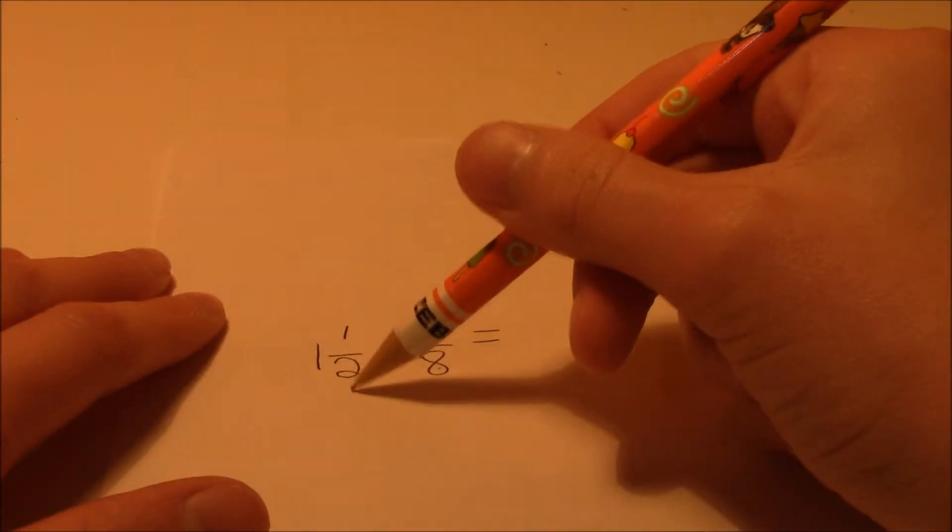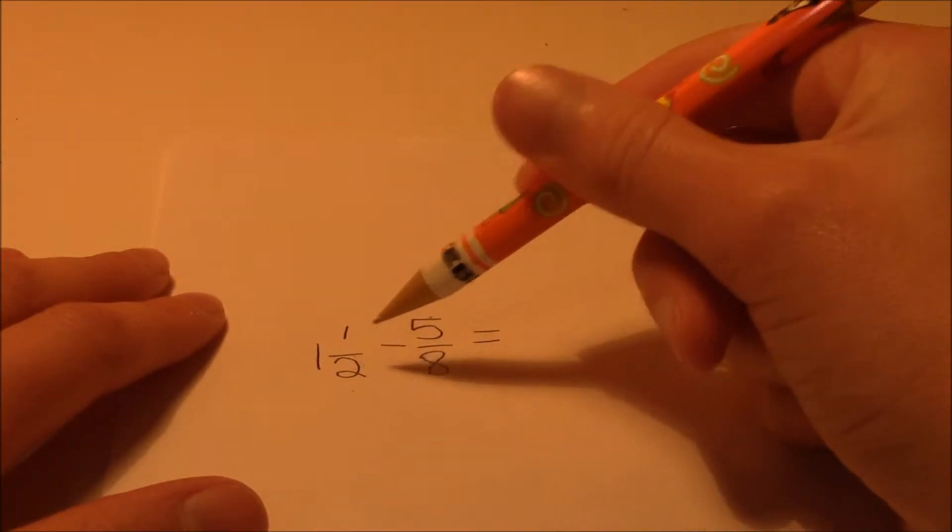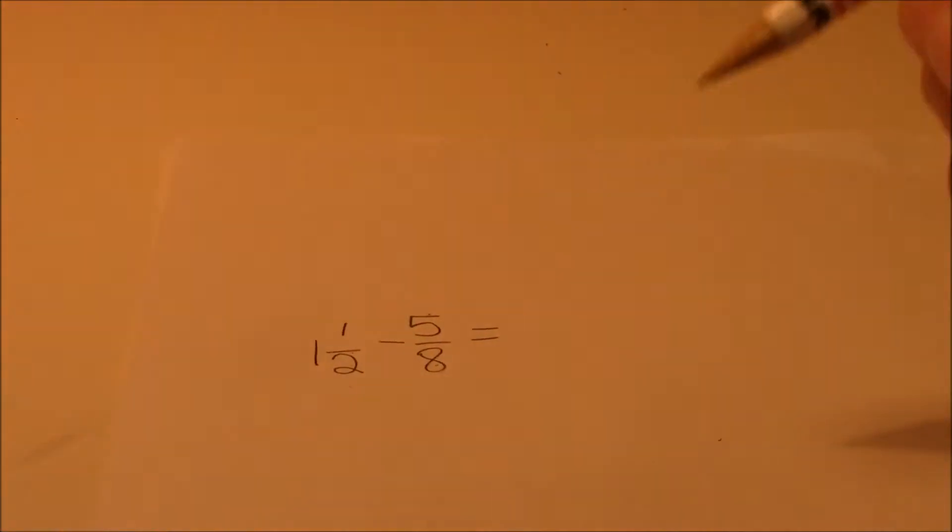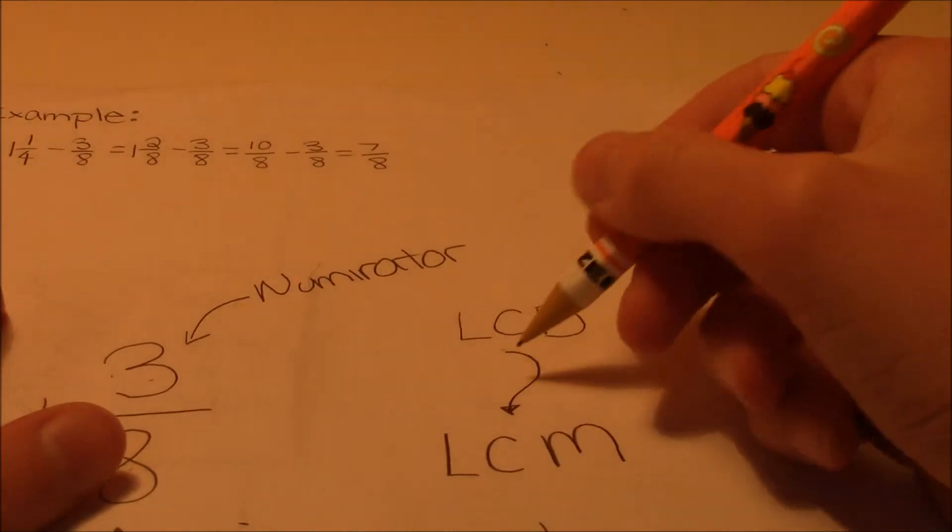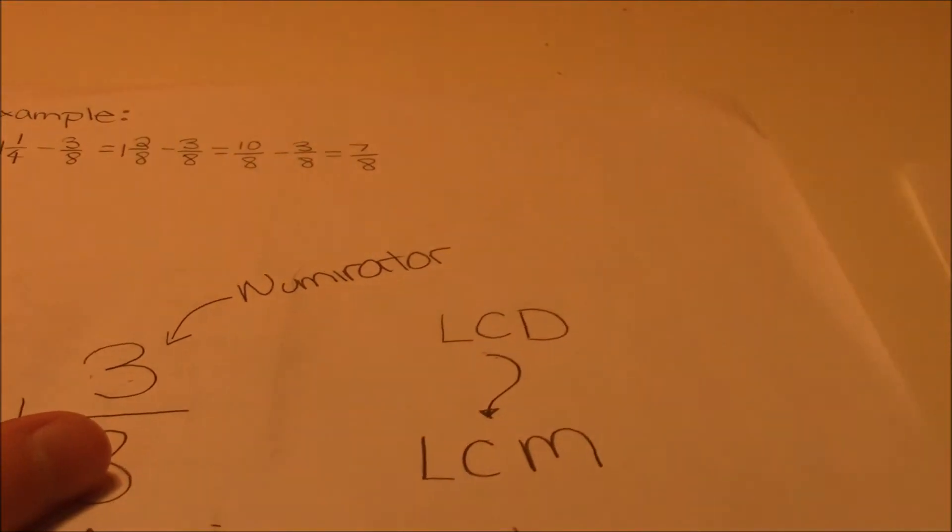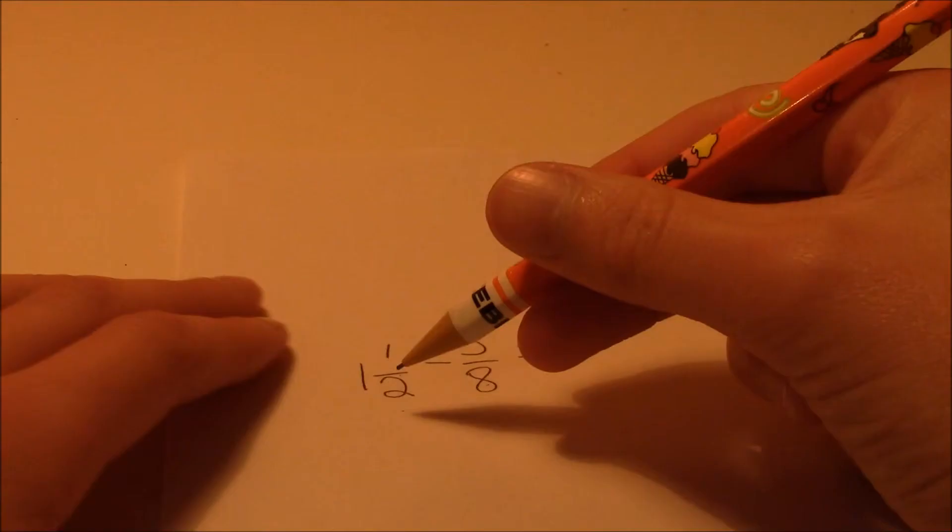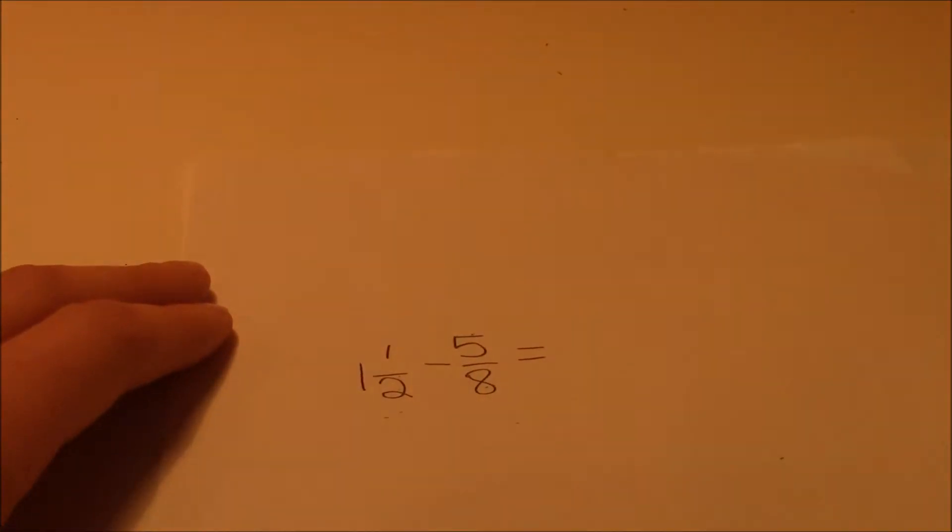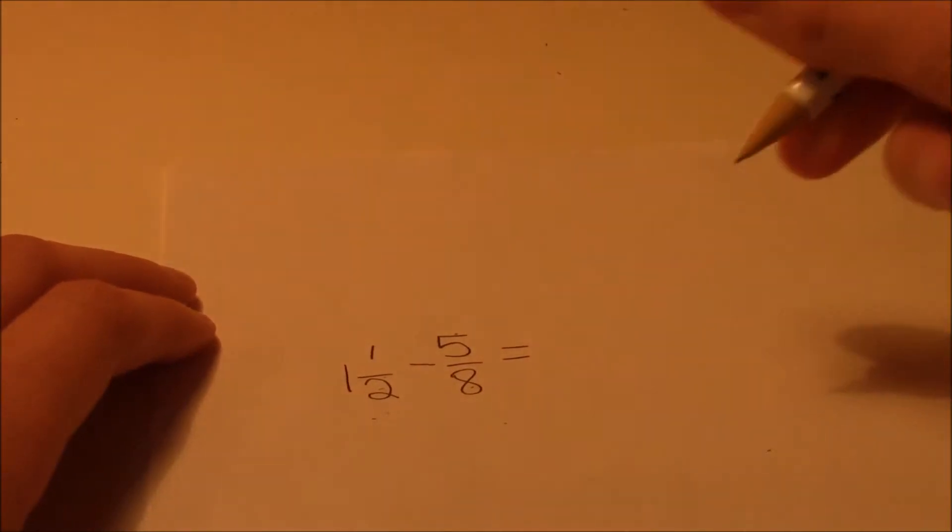So we need to find out the lowest common denominator, which is the LCD. And the lowest common denominator is basically the LCM, which is the lowest common multiple of 2 and 8. So 2 goes into 8, right? So 8 would be the lowest common multiple, which is the lowest common denominator,